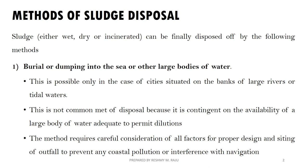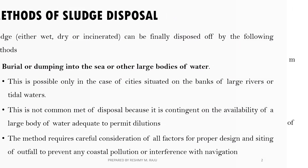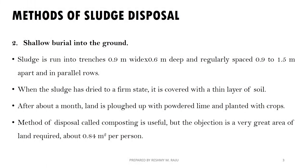Treatment of sludge requires proper disposal. The first method is Burial or Dumping into the sea or other large bodies of water, particularly on the coastal side of cities where there is a large river. This is a very common method, but it requires careful consideration of all factors for proper design and siting to prevent coastal pollution or interference with navigation.